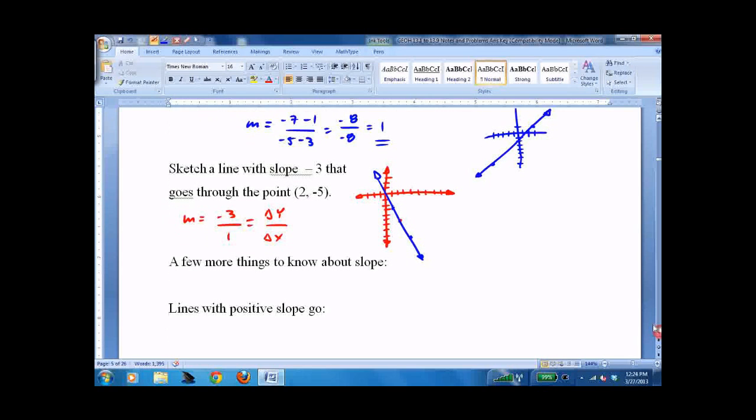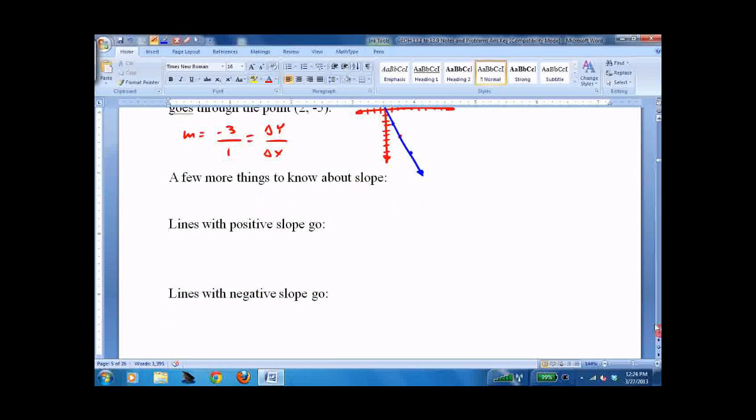Now, the rest of this is just a few things to know about slope. Lines with positive slope go up to the right. As I showed in the last two examples.